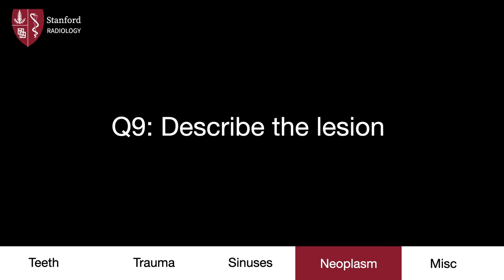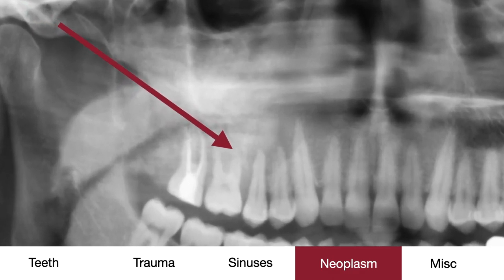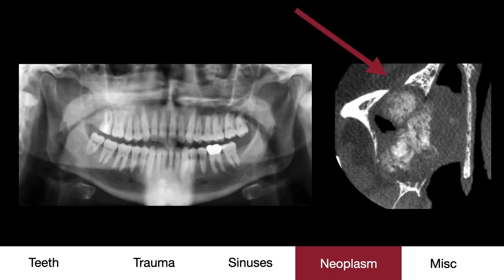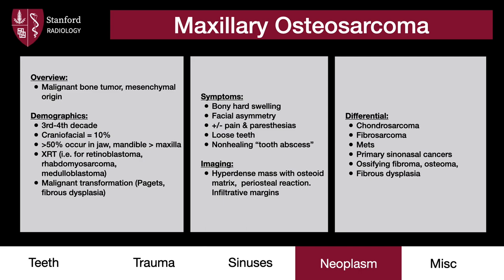Case 9 — describe the lesion. In the region of the right maxillary sinus and alveolar ridge, there is asymmetric opacification. This very well could be sinusitis like we saw earlier, but note how there is involvement of the molar root, suggesting something more sinister. CT showed a heterogeneous lesion with bone erosion and internal osseous matrix. MR highlighted the contrast-enhancing nature of this neoplasm, which was found to be an osteosarcoma. Approximately 10% of osteosarcomas involve the craniofacial region, and of those, half occur in the jaw, with the mandible more common than the maxilla.